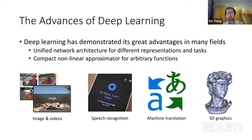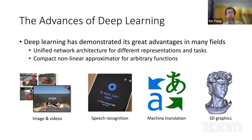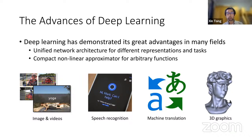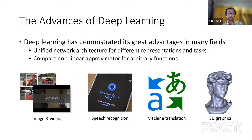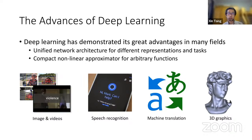In recent years, deep learning has demonstrated its advantage in many fields, such as image and video understanding, speech recognition, machine translation, as well as 3D graphics. Compared to traditional methods, neural networks provide compact non-linear representations and unified network architectures and training schemes for different tasks.